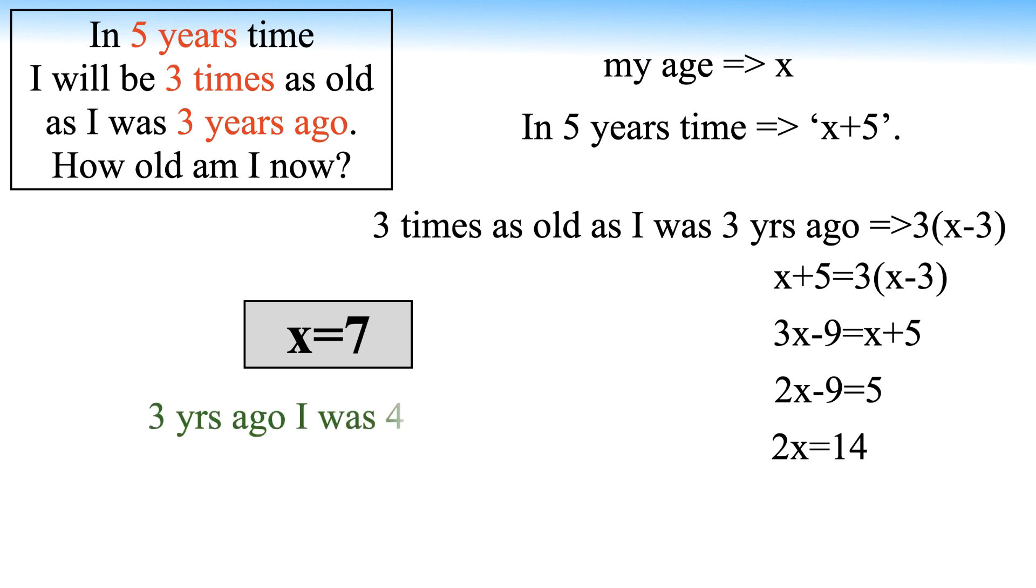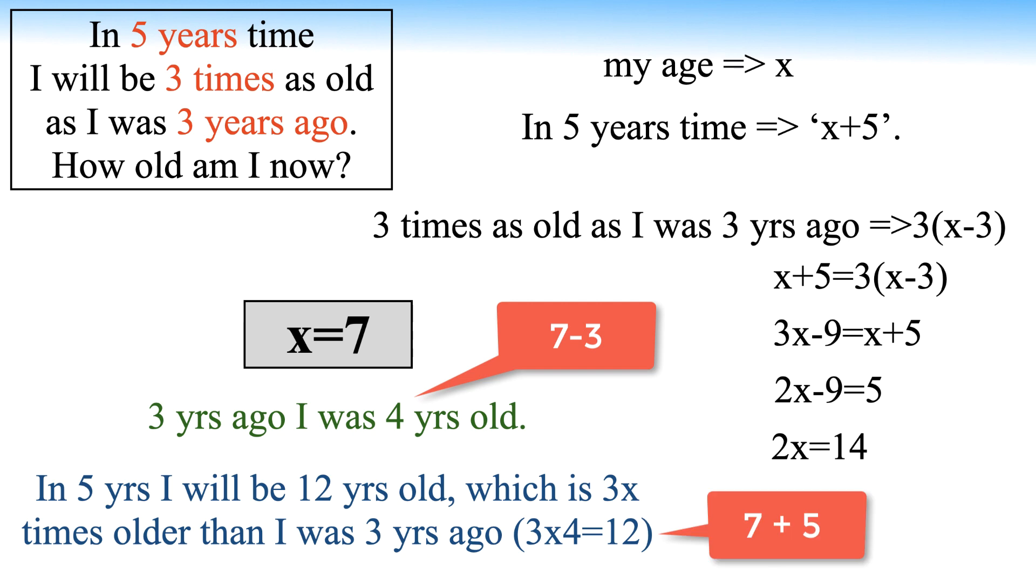So three years ago I was four years old. In five years I will be 12 years old, which is three times older than I was three years ago. So 7 is the correct solution.